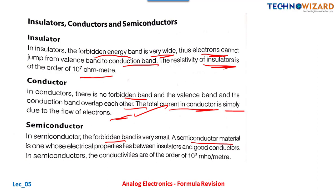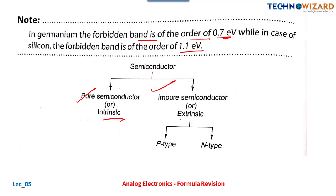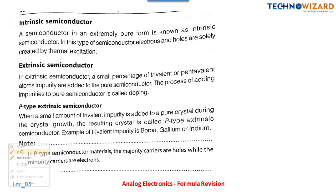In semiconductors, the forbidden energy gap is very small. A semiconductor material is one whose electrical properties lie between those of an insulator and a conductor. Conductivity is on the order of 10² mho per meter. For germanium, the forbidden gap is about 0.7 eV, and for silicon it is 1.1 eV. There are two types: pure (intrinsic) semiconductor and extrinsic semiconductor, which is further divided into P-type and N-type depending on the doping.